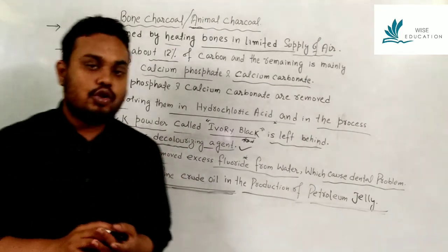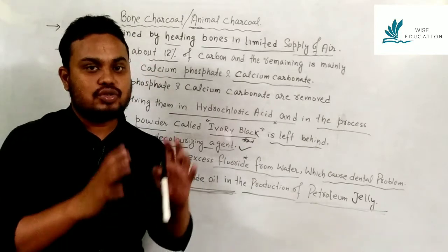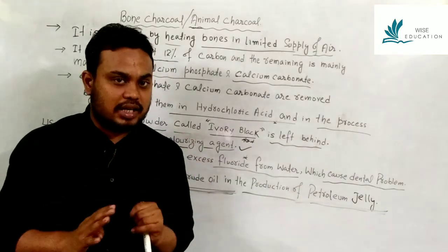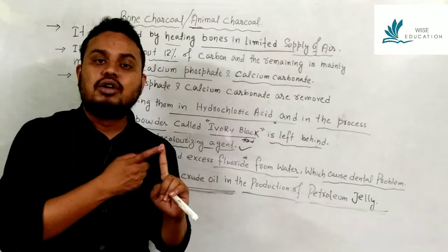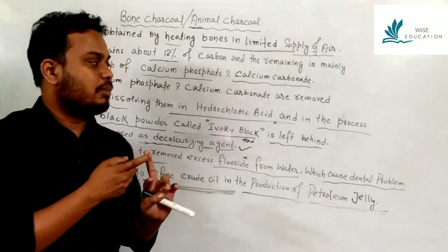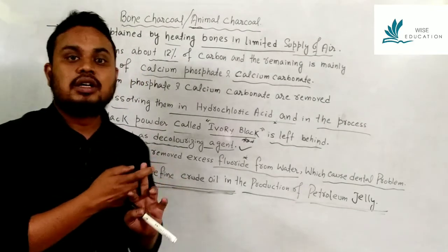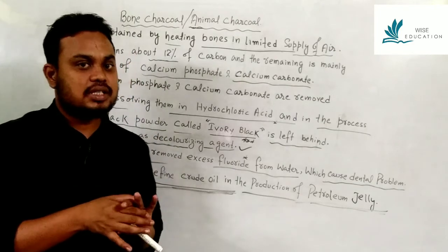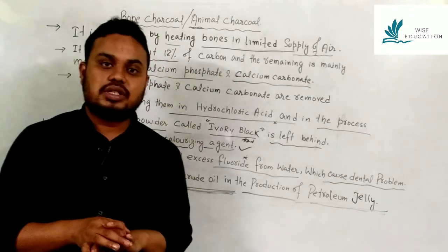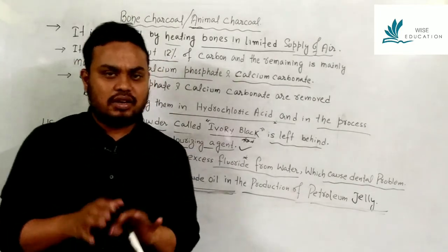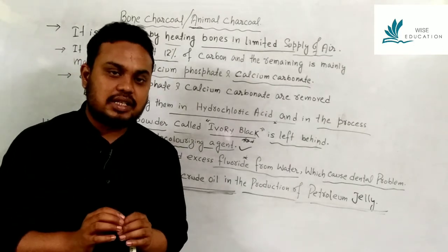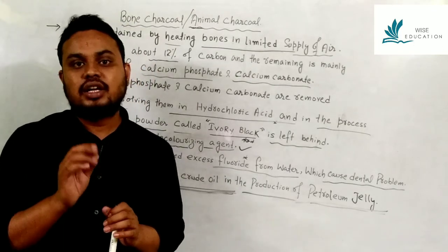In summary, we have covered amorphous forms of carbon, focusing on charcoal — including wood charcoal (properties and uses), sugar charcoal (uses), and bone charcoal (uses). If you have any doubts, write in the comment section and I will try to answer.